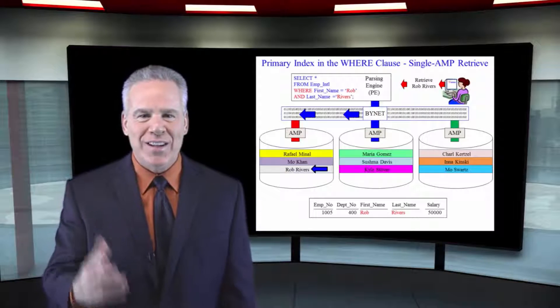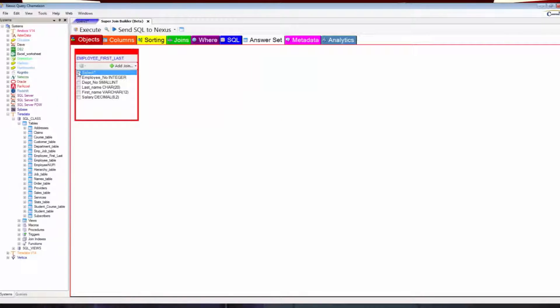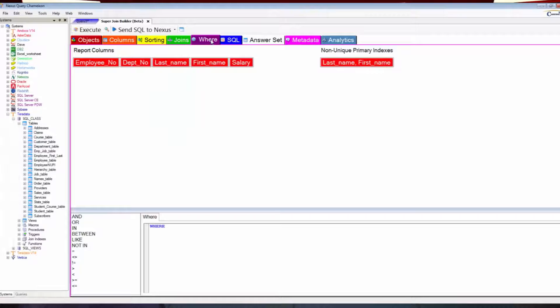The great news is you've got multiple columns in your primary index. Here's the bad news: every time the user writes the SQL, they're going to have to say where first name equals this and last name equals this, because that's the way it works.